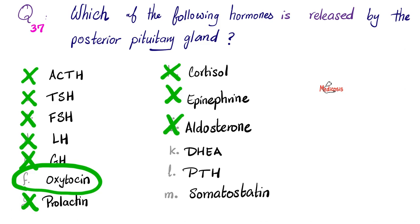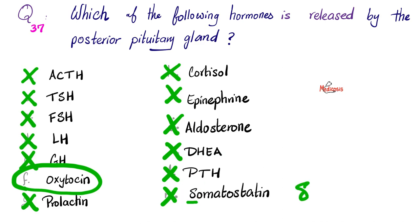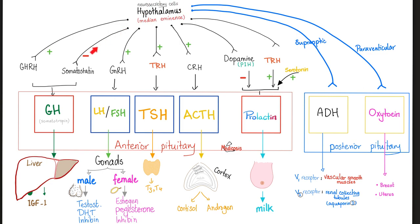Aldosterone — adrenal cortex. DHEA — adrenal cortex. Parathyroid hormone comes from the parathyroid gland. Somatostatin comes from two main places: number one, your pancreas — the delta cell — because somatostatin is a doofus if you've watched my videos. The way I remember it is that you can write delta similar to how you write an S. Somatostatin comes from the delta cells in the islets of Langerhans in the pancreas. It also comes from the hypothalamus to inhibit growth hormone secretion by the anterior pituitary.